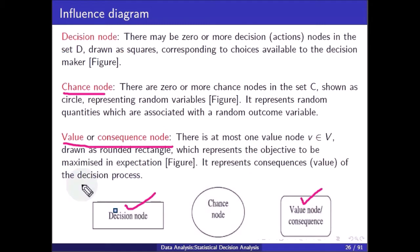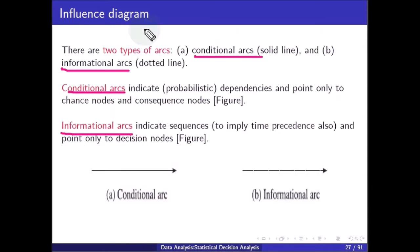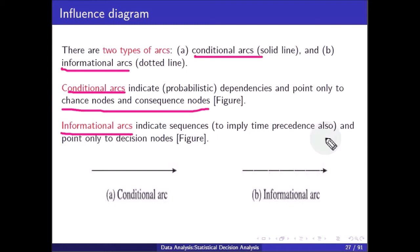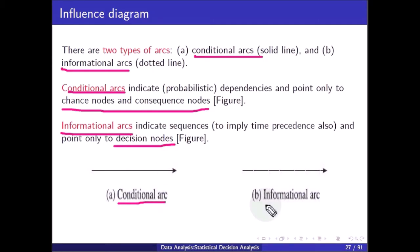The value node represents the consequences of the decision process. So we can see a decision node, a chance node, and a value or consequence node. There are two types of arcs: conditional arcs and informational arcs. Conditional arcs indicate dependencies and point only to chance nodes and consequence nodes, while informational arcs indicate sequences and point only to decision nodes.